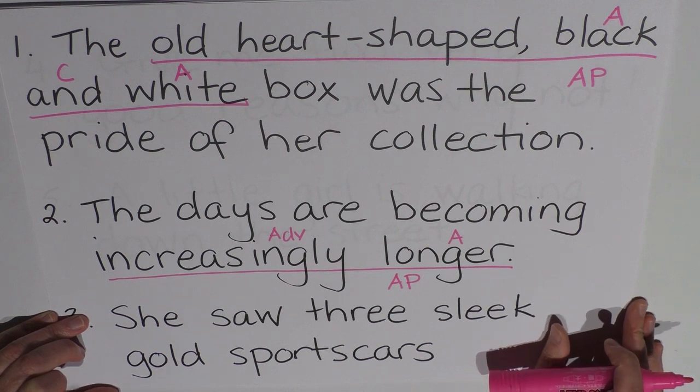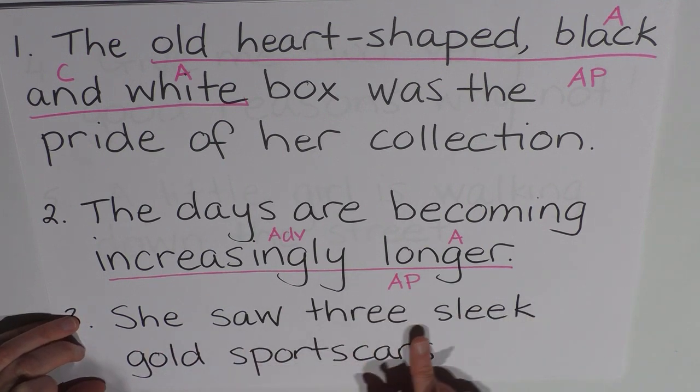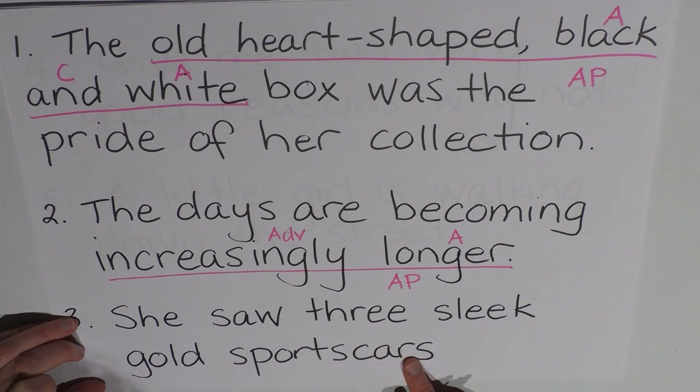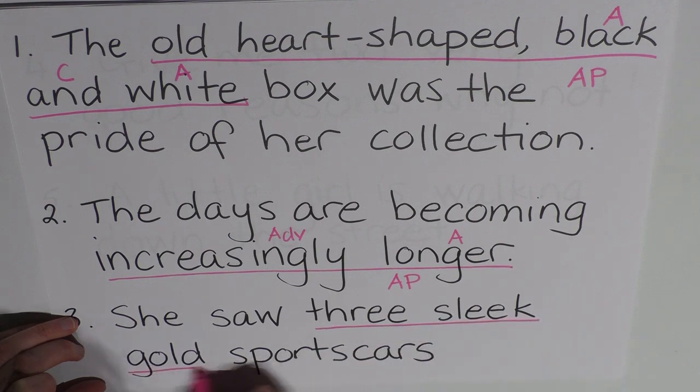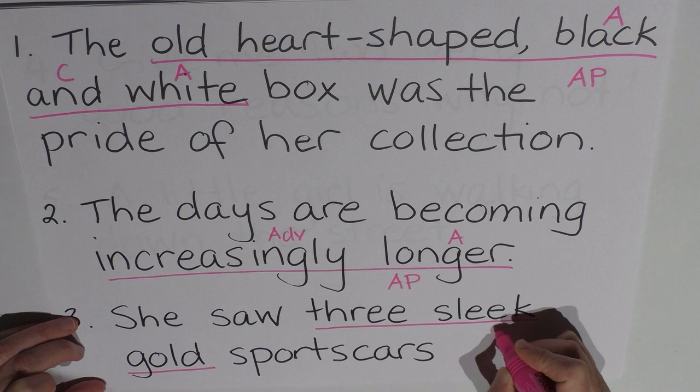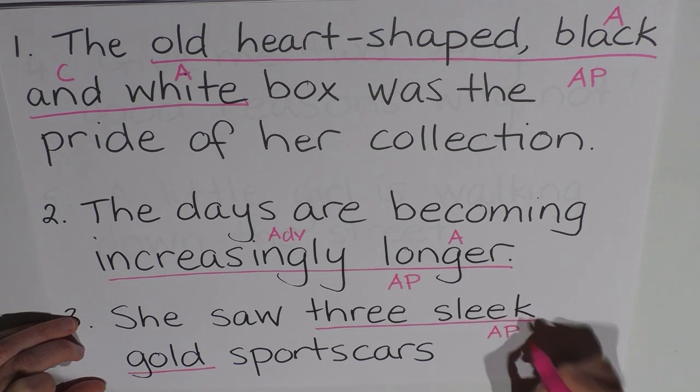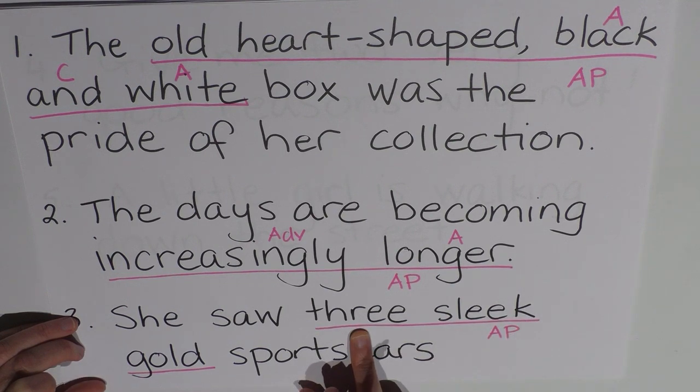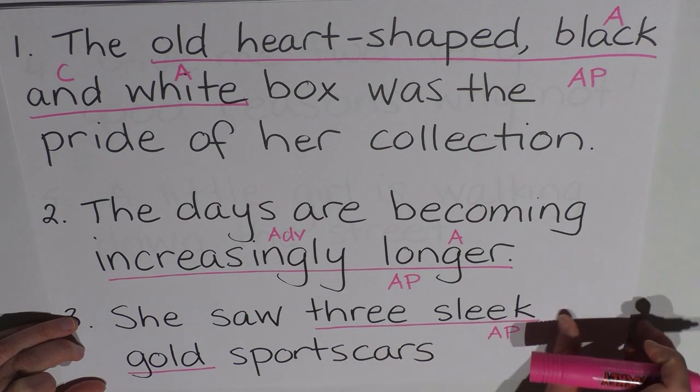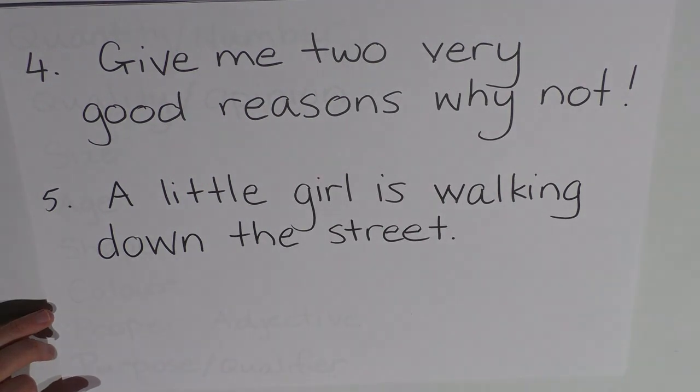Let's look at the next one. She saw three sleek gold sports cars. So I've put three sleek gold are our adjectives here, and that's our adjective phrase. You'll notice that there's number three, which is an adjective as well. Okay, let's go over to the next one.